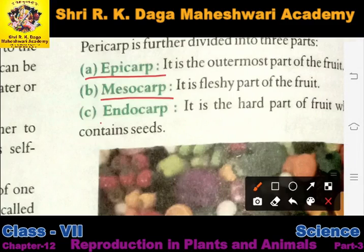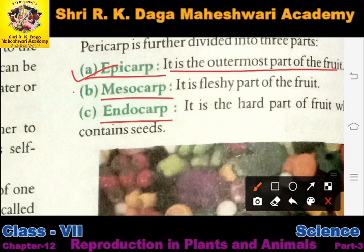Pericarp is further divided into three parts: epicarp, mesocarp, and endocarp. Epicarp is the outermost part of the fruit — woh bahari hissa hota hai kisi bhi fruit ka. Mesocarp is the fleshy part of the fruit.